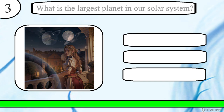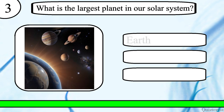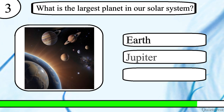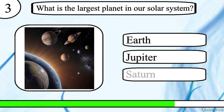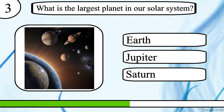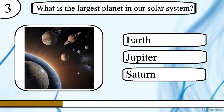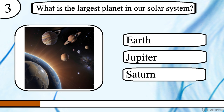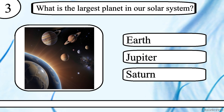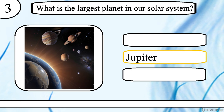Question 3. What is the largest planet in our solar system? Earth, Jupiter or Saturn? The correct answer is Jupiter.